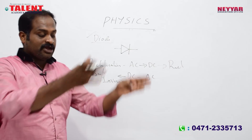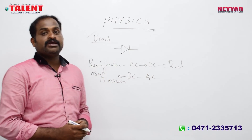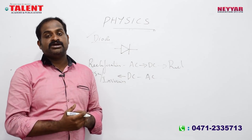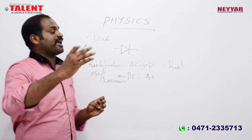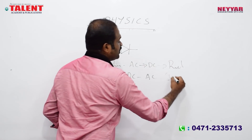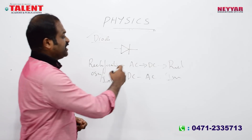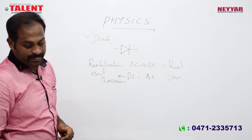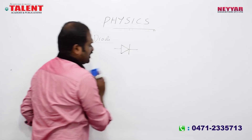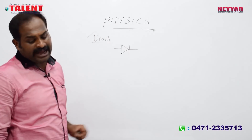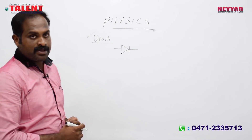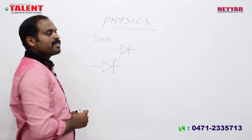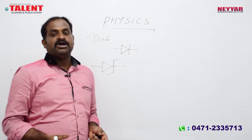Inversion converts DC to AC. Next is the Zener diode — the Zener diode is used for voltage regulation.